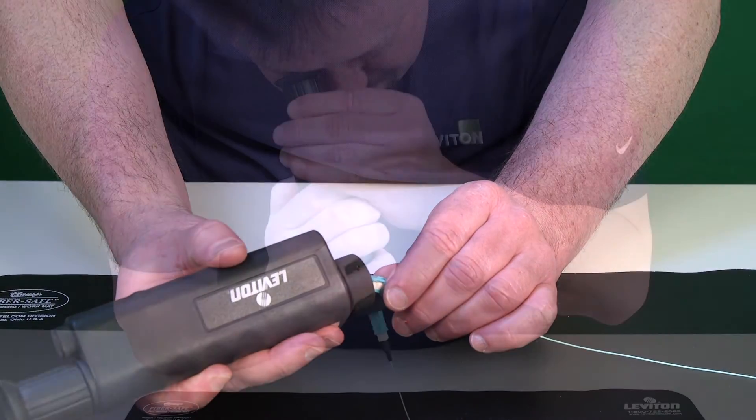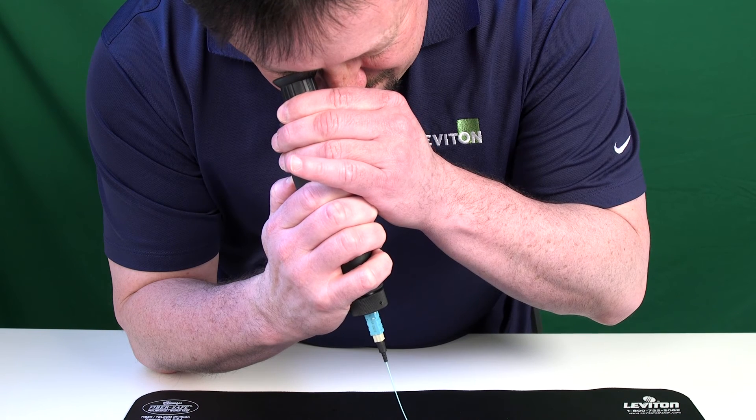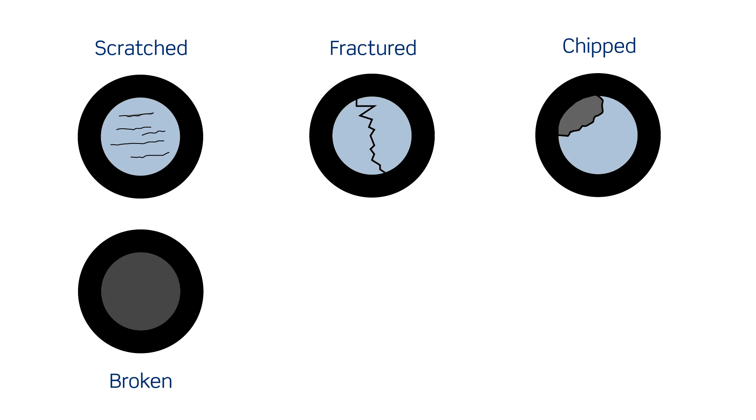Inspect the fiber using the 200 times inspection scope. Be sure the fiber is not scratched, cracked, or broken.